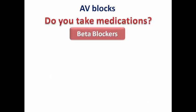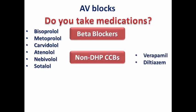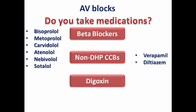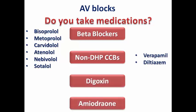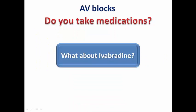Let's give some examples. We have beta blockers, which are famous causes for AV blocks or sinus node dysfunction; non-DHP calcium channel blockers like verapamil and diltiazem; plus digoxin and amiodarone. These are the famous medications we usually ask about. But what about ivabradine? We know it may cause sinus bradycardia, but can it cause AV block?